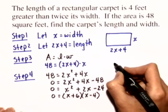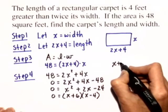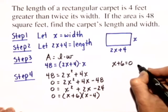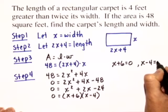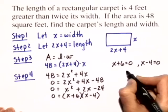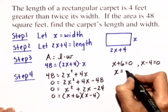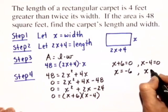We set each of these factors equal to 0: x plus 6 equals 0, or x minus 4 equals 0. We'll solve both of these equations. We'll get x equals negative 6, or x equals 4.